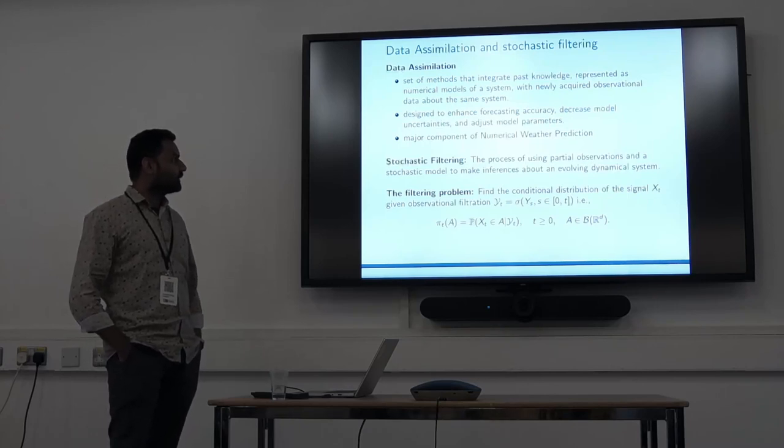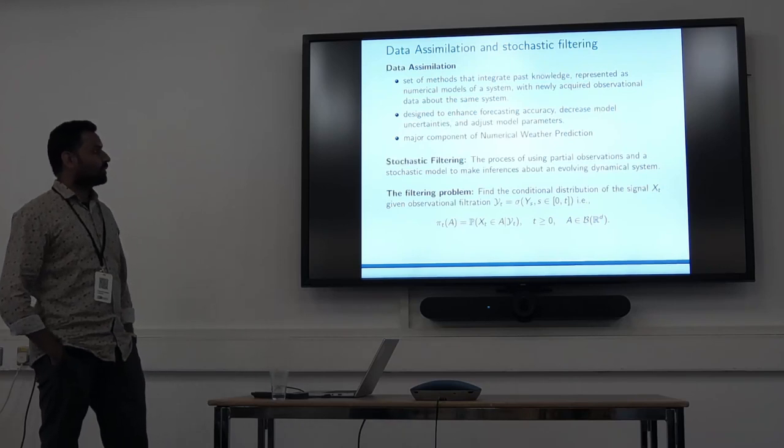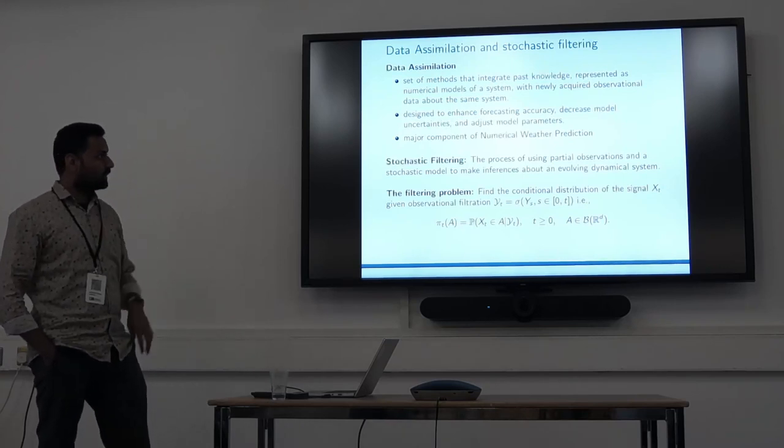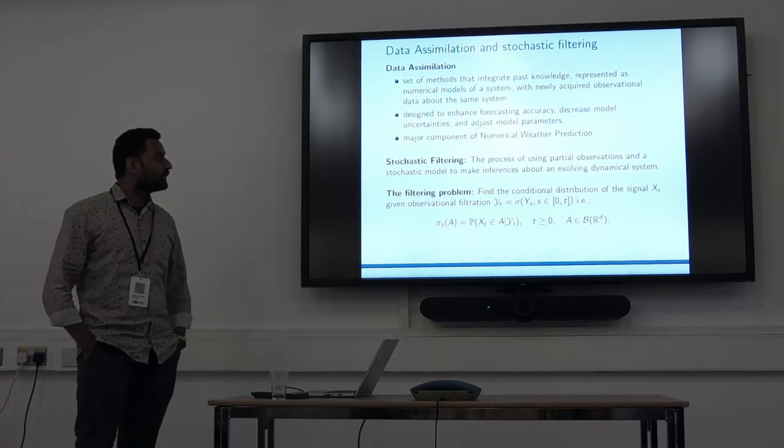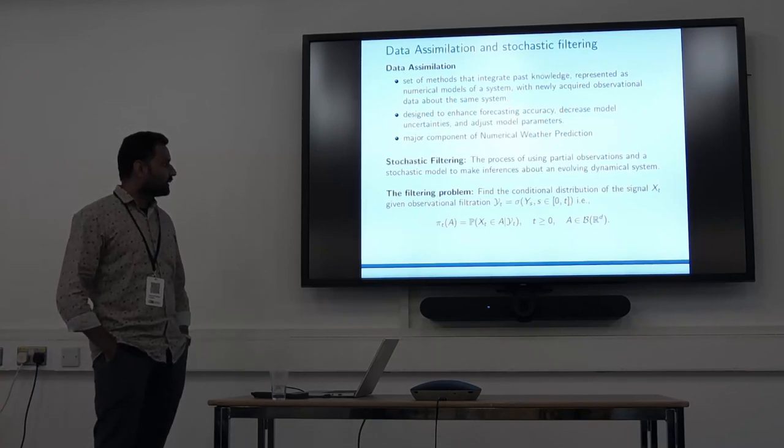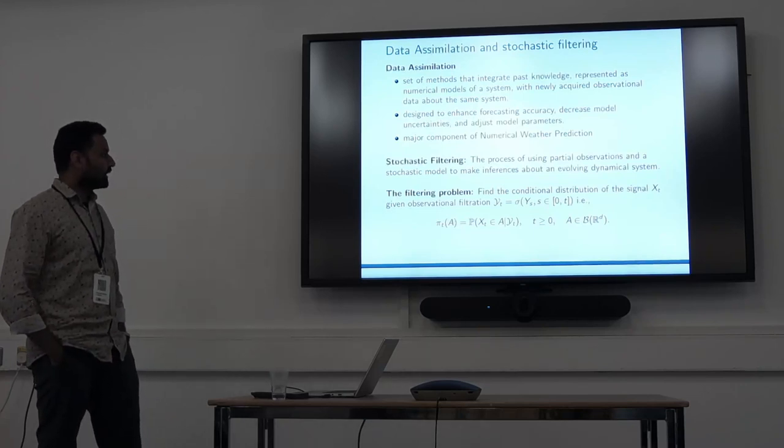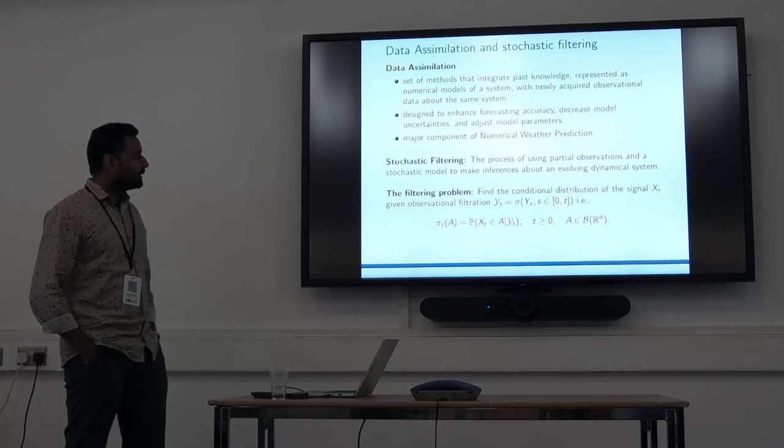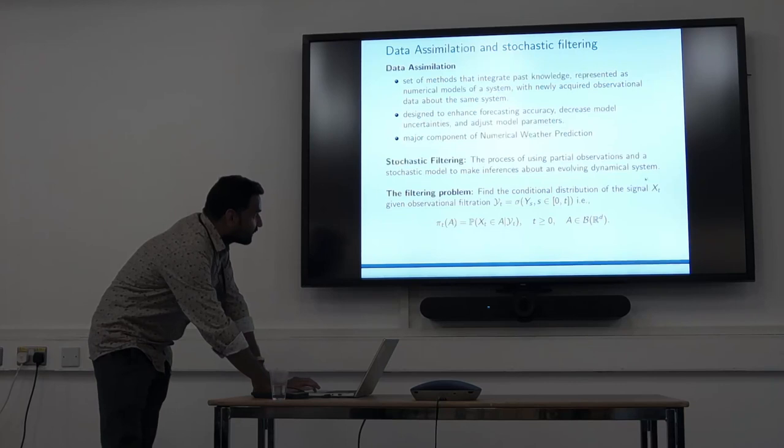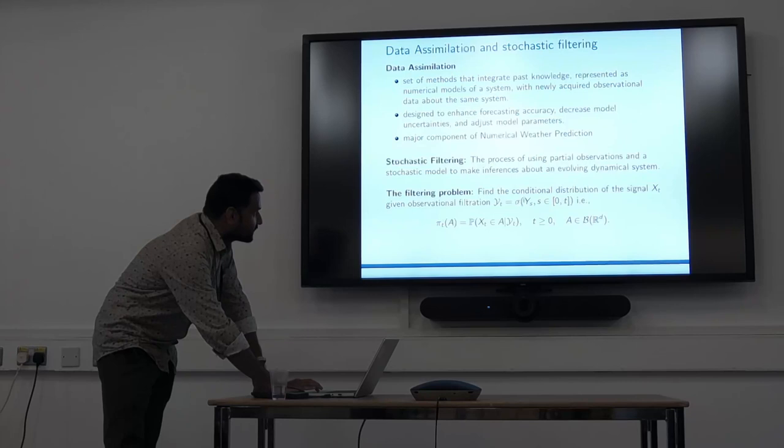What is stochastic filtering? It's the process of using partial observations and a stochastic model to make inferences about any evolving dynamical system. In mathematical terms, a filtering problem is to find the conditional distribution of the signal x_t given observational filtration y_t. Here x_t has dimension n_x and y has a lesser dimension than this signal. In mathematical terms we can say the probability of x_t given this partial observation data.